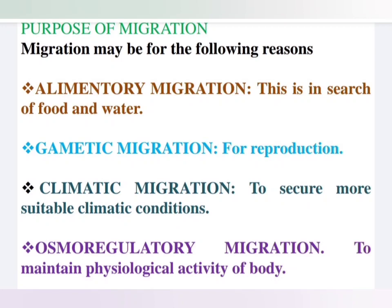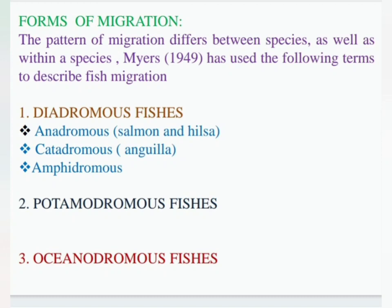Osmoregulatory Migration. In terms of pattern, there are different types of migration. Myers classified them as: Anadromous, Catadromous, and Amphidromous.